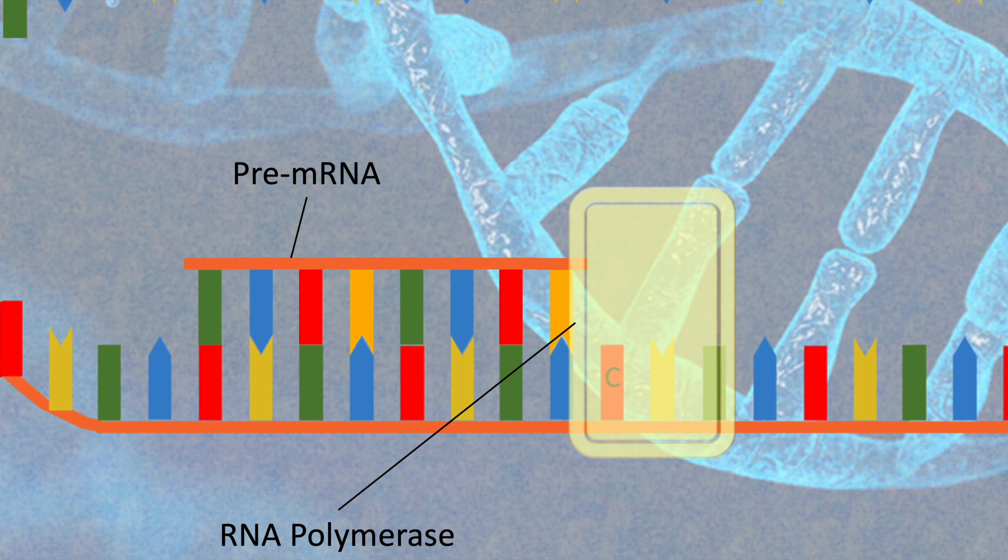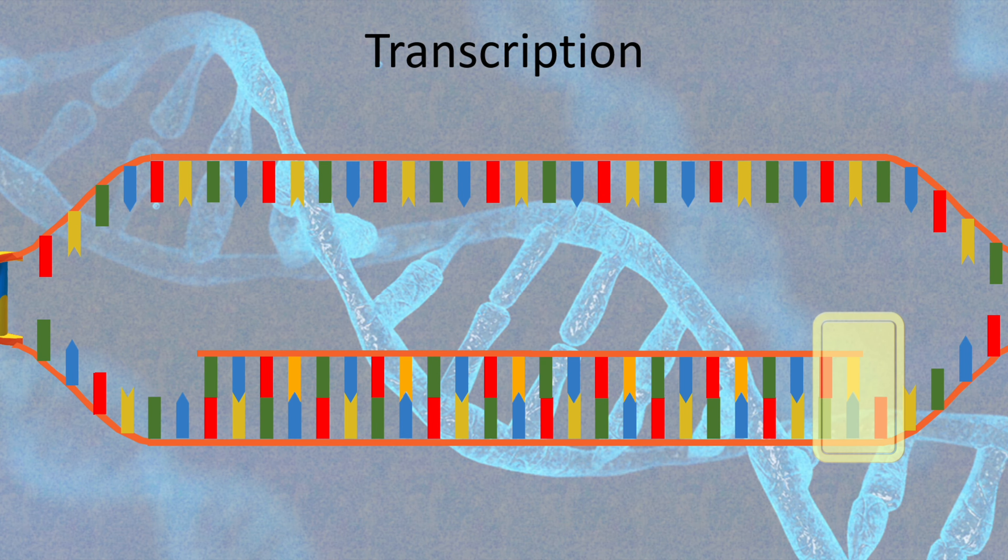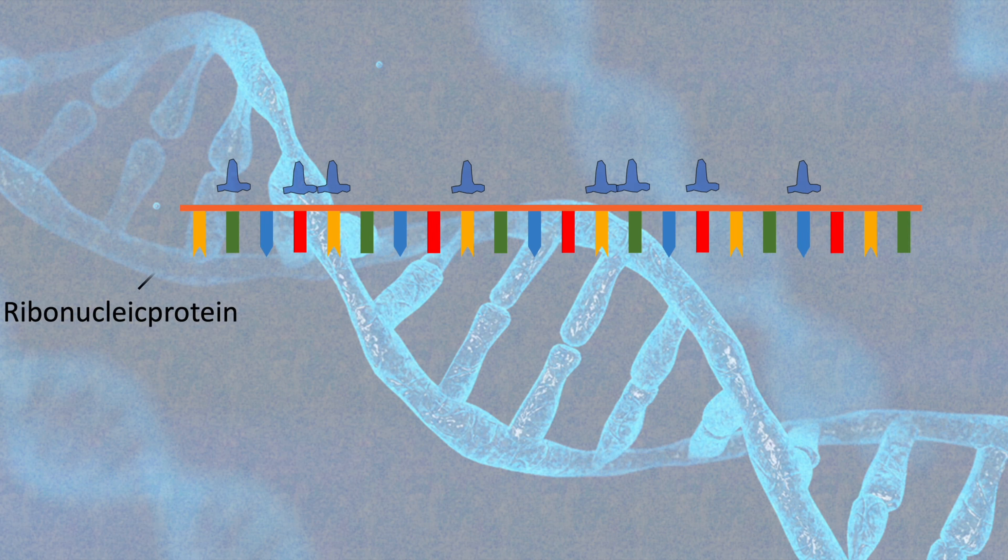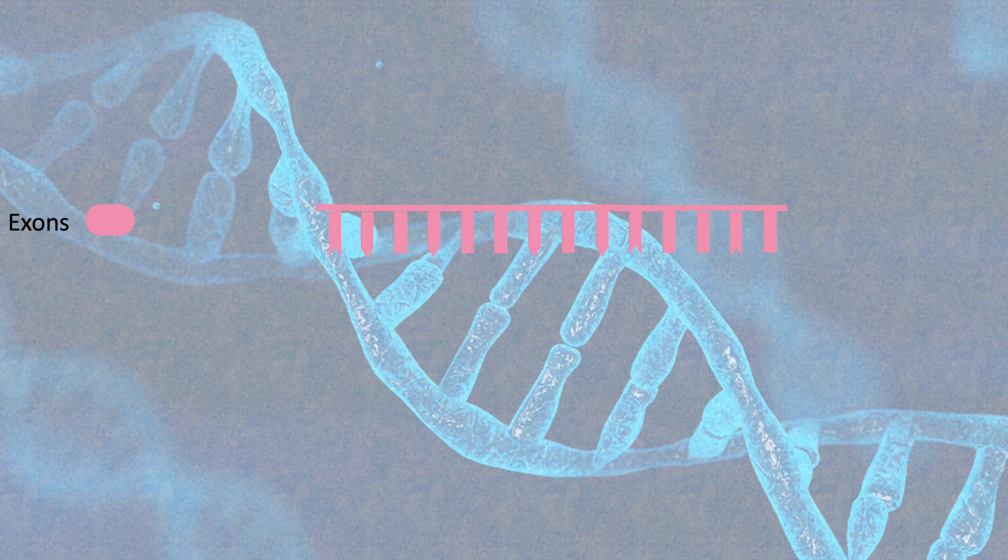When there is a C, it is complemented by a G. When there is a G, it is complemented by a C. T by an A, but A is complemented by a U which is short for uracil. This pre-mRNA is then edited by ribonucleic proteins, which take out the useless parts called introns. The useful parts, called exons, remain and form mature mRNA.